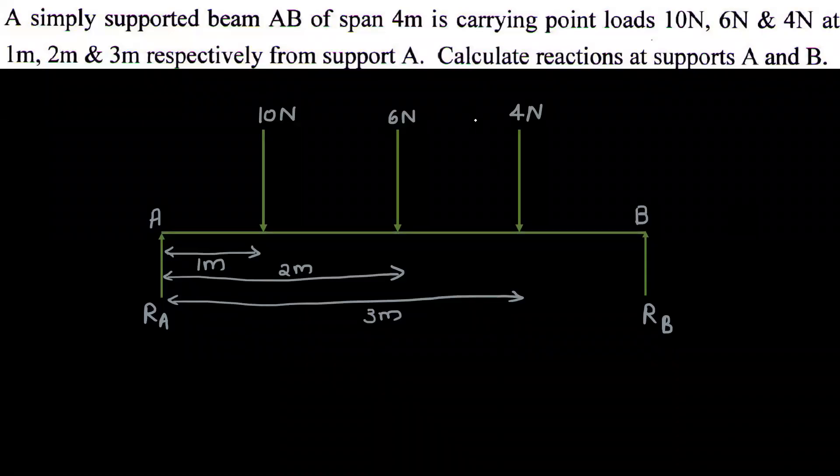A simply supported beam AB of span 4m is carrying point loads 10N, 6N and 4N at 1m, 2m and 3m respectively from support A. Calculate the reactions at supports A and B.